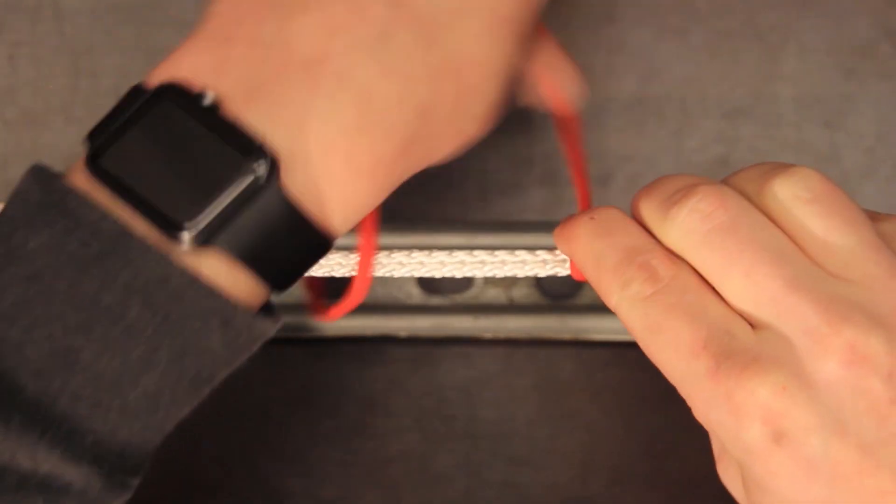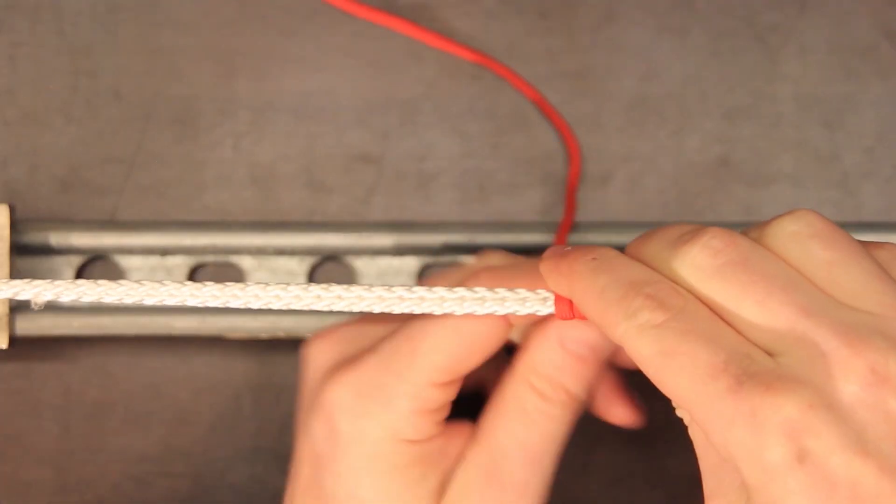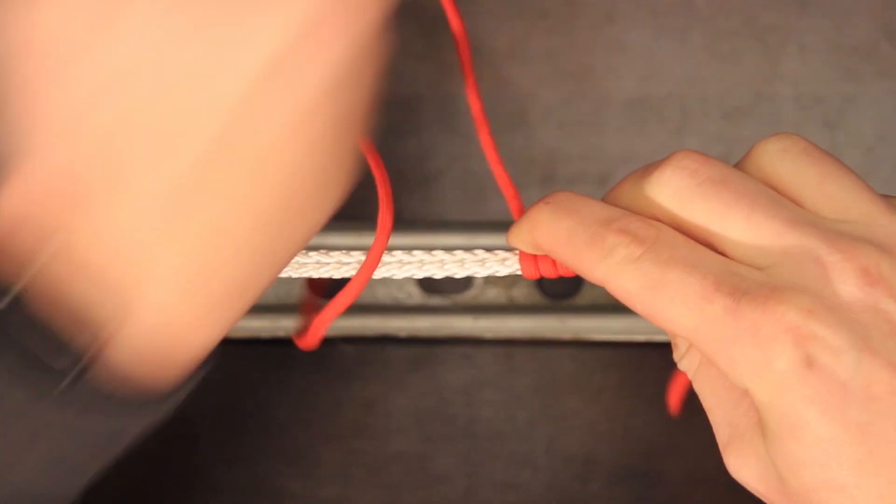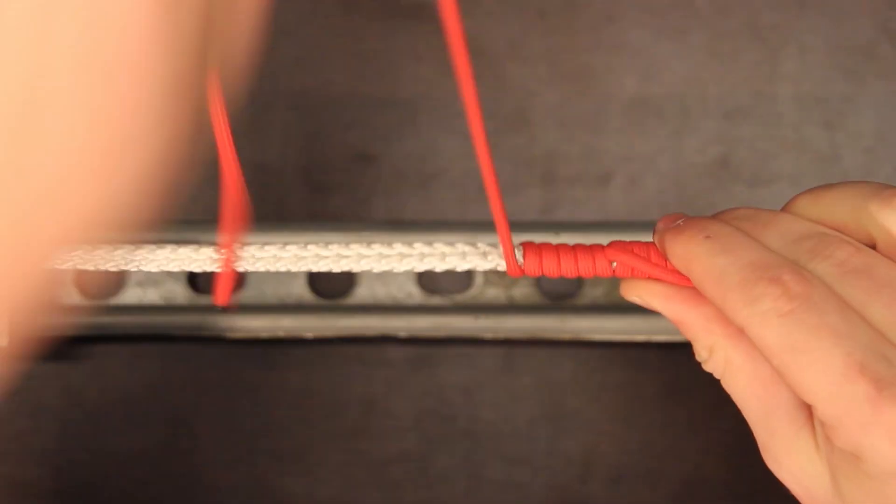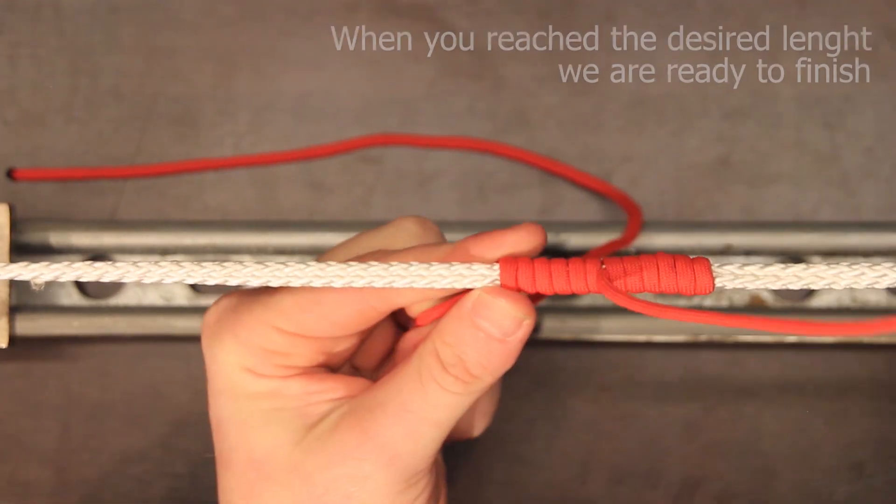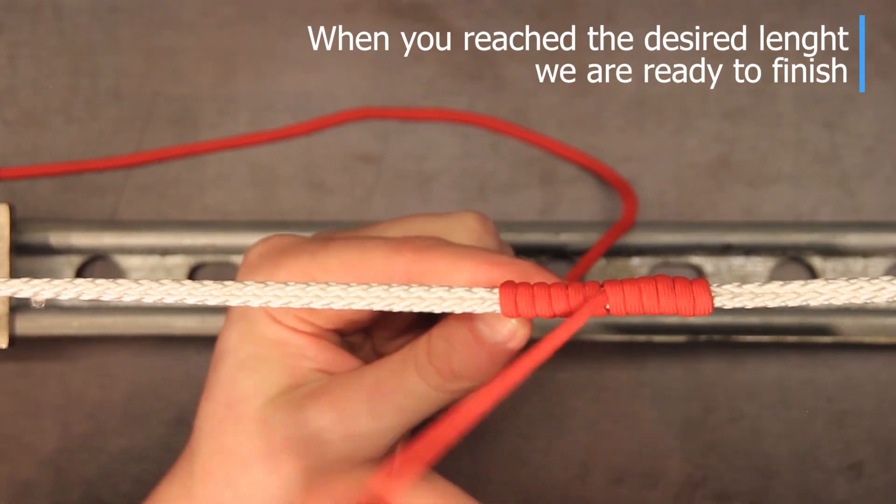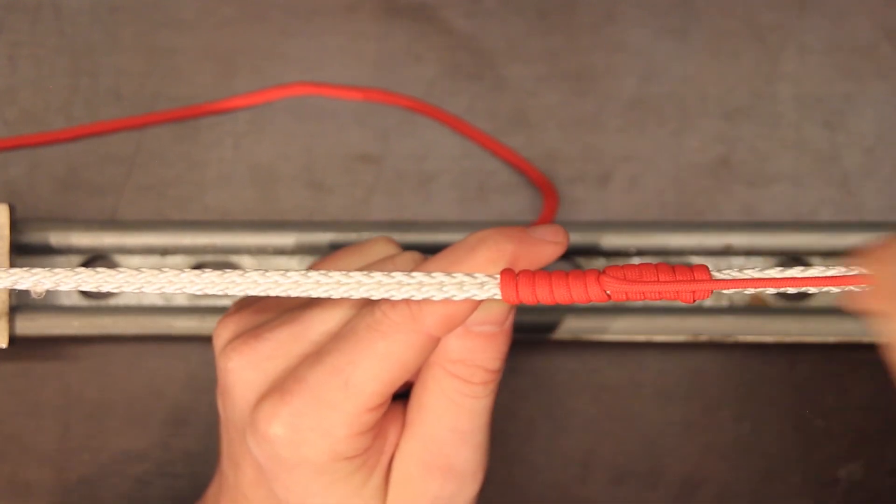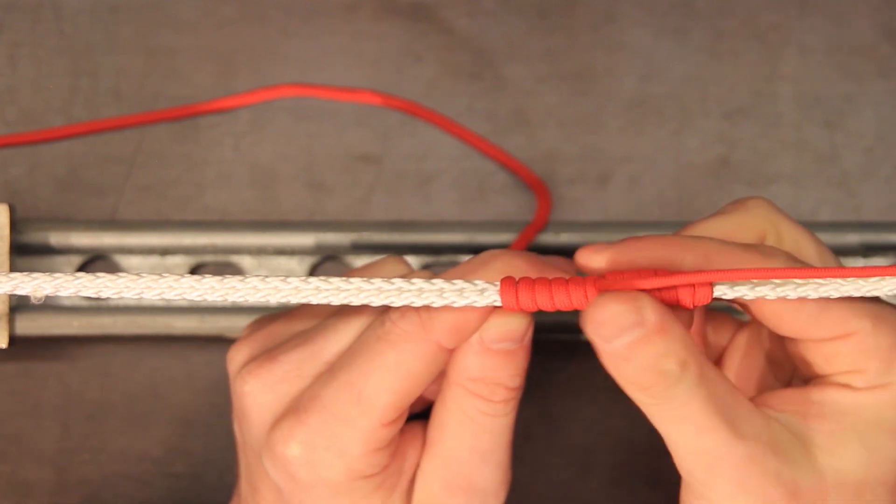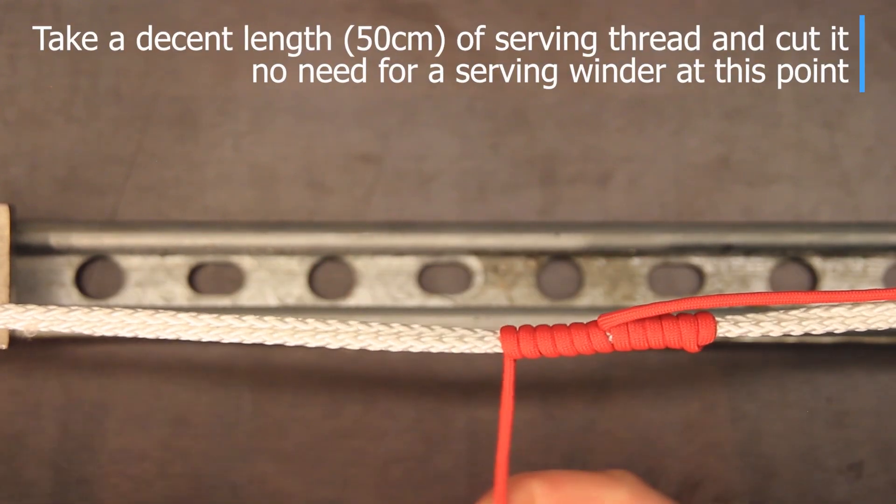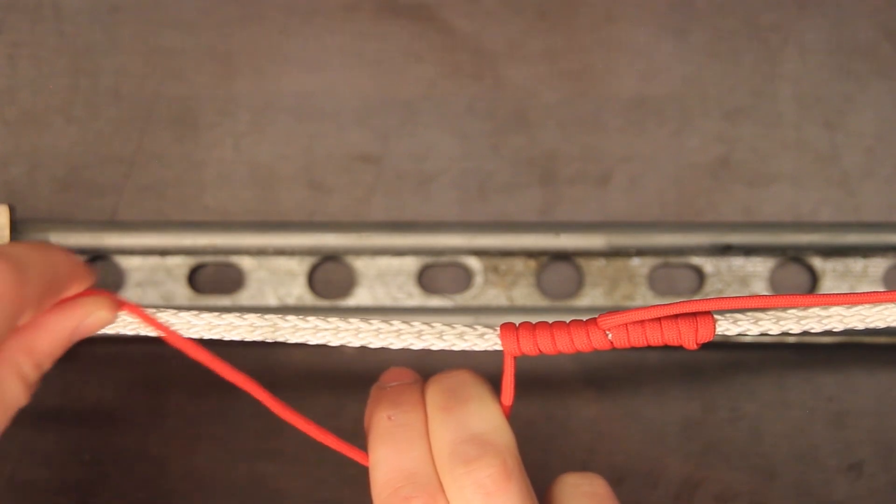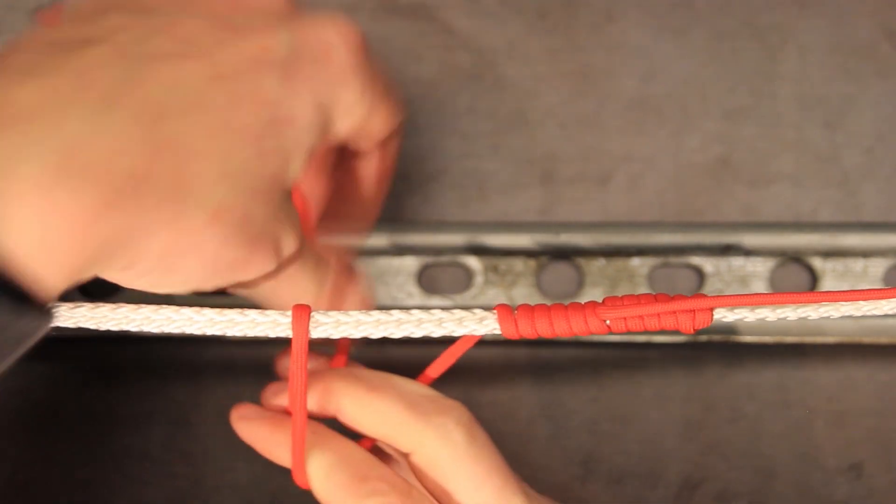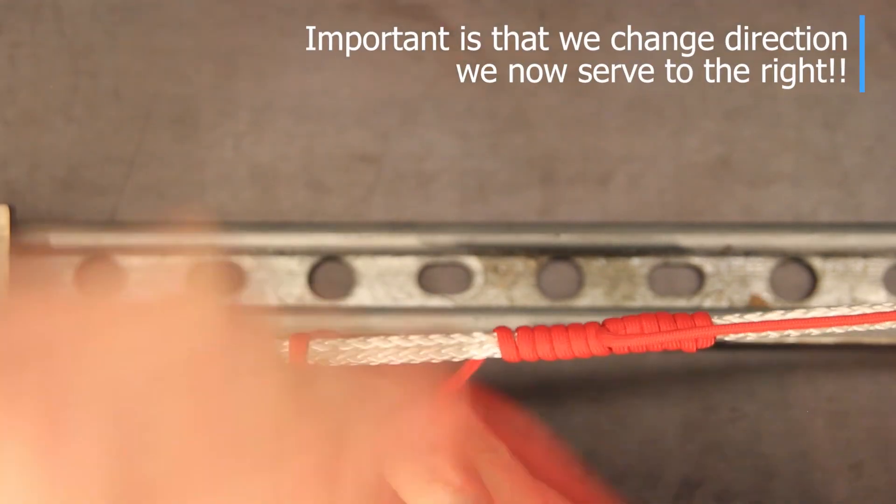Now that you have locked this thread in you can just start serving to the length you want to have for this type of serving and when you reached almost at the end we're gonna make a little loop so we place two fingers on the thread so we keep serving forward but instead of going to the left we're serving to the right.